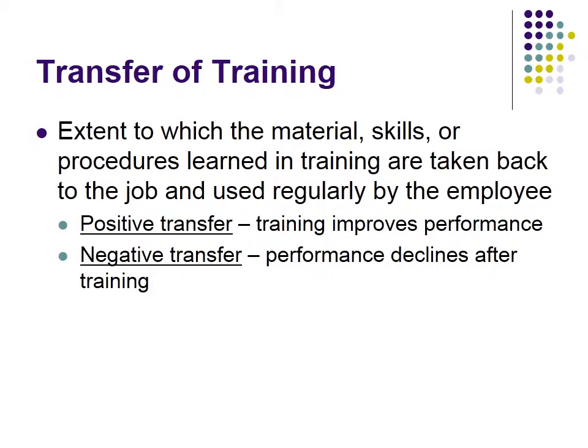Transfer of training is the extent to which the material, skills, or procedures learned in training are taken back to the job and actually used regularly by the employee — the idea that the learning is actually being utilized. There are two types: positive transfer, where training actually improves performance; and negative transfer, where performance declines after training. Just whether the skills are being utilized isn't enough — we want to know if it's positive transfer, meaning those behaviors actually improve performance, that end goal we're looking for.